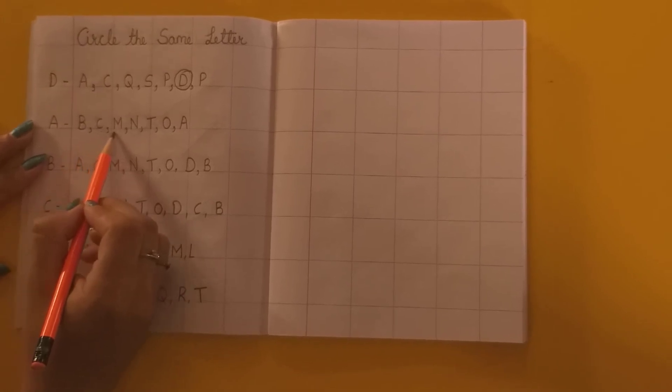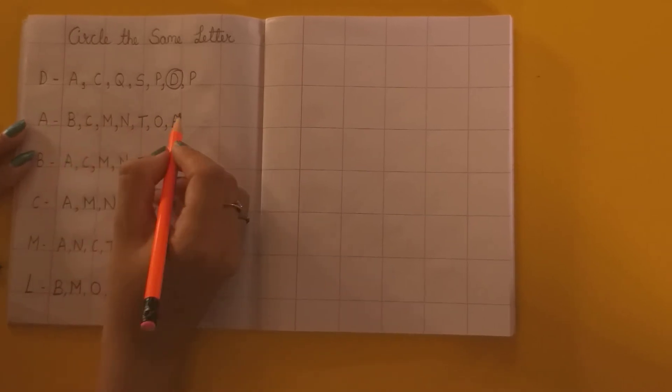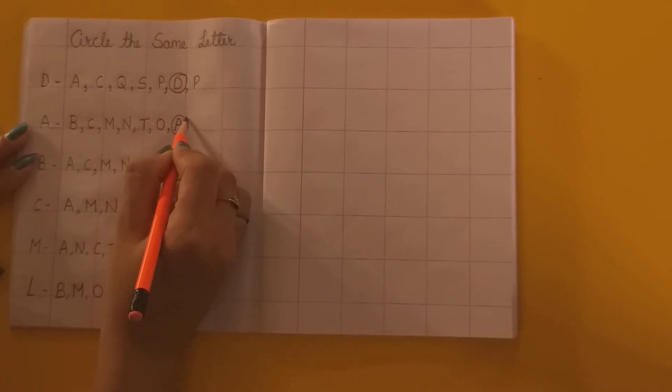Yeh kounsa letter hai? A. Dundou A kidhar hai? Kaan A chupke baitha hai? Yeh raa A. Dekho yaan hai. Last mein baitha hai chupke.